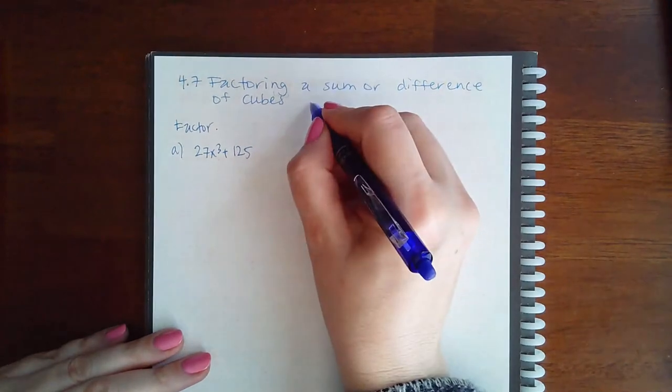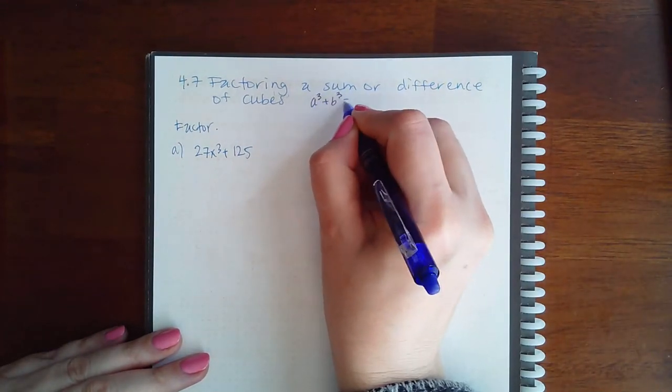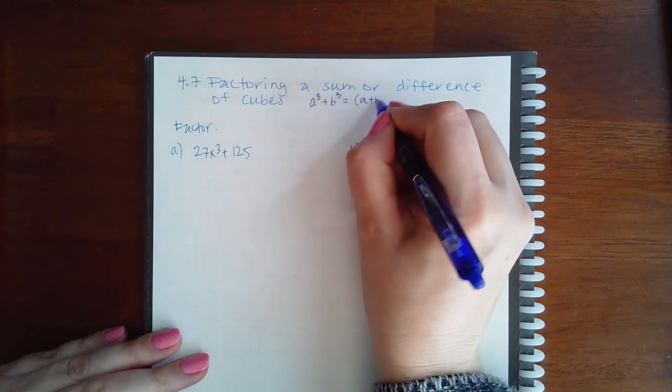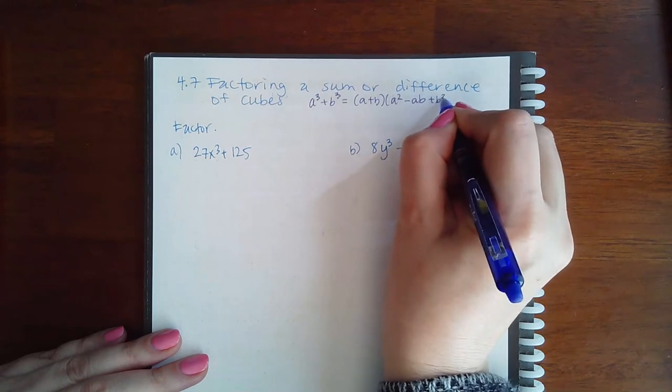So for the sum of two perfect cubes, the formula is a plus b, a squared minus ab plus b squared.